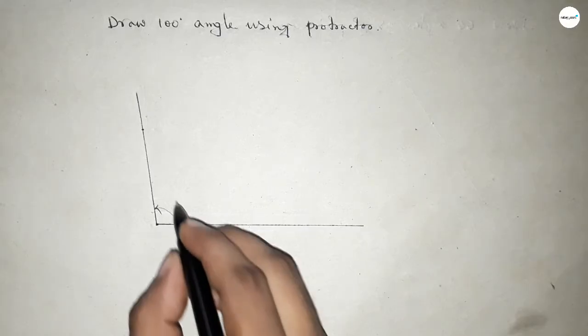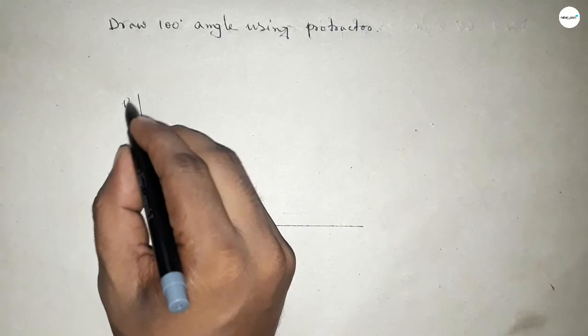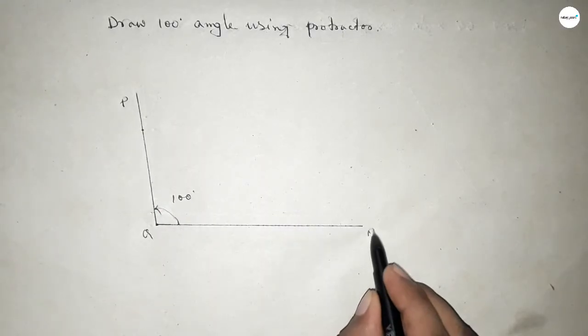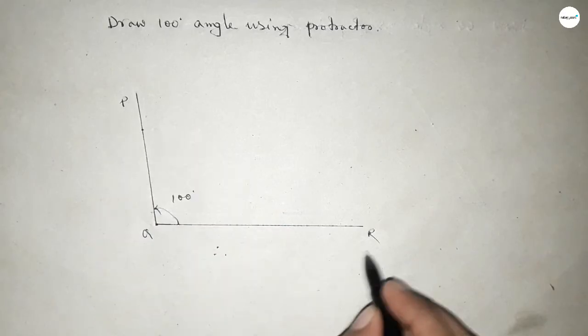So this is 100 degrees. Now this is P, Q, and R. So therefore, angle PQR equals 100 degrees. That's all, thanks for watching.